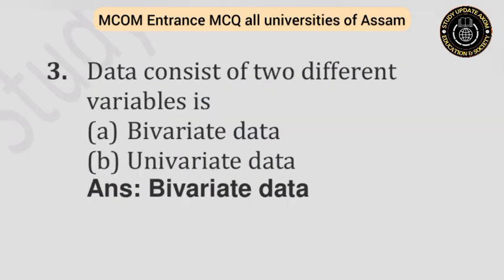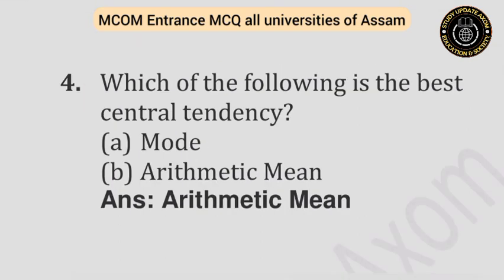Question number three: Data consisting of two different variables is — Option A: Bivariate data. Option B: Univariate data. Answer is bivariate data. Question number four: Which of the following is the best measure of central tendency? Option A: Mode. Option B: Arithmetic mean. Answer is arithmetic mean.